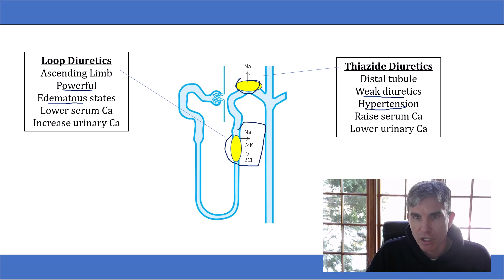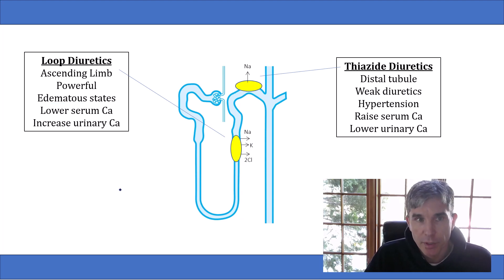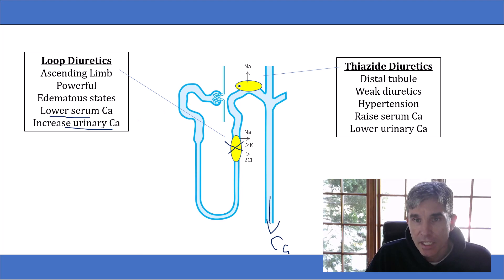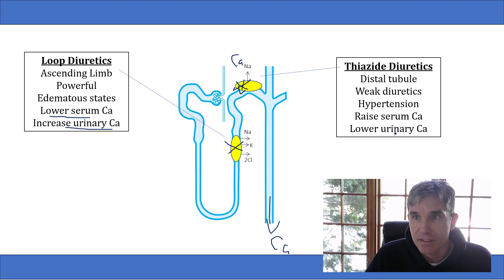The reason they differ in urine output has to do with where they work in the nephron — this portion is very important for reabsorbing sodium and water, while the distal tubule portion is less important. The second big difference between loop diuretics and thiazides has to do with calcium. When you block the loop diuretic channel, more calcium goes out in the urine — you lose calcium from the body, so loop diuretics lower serum calcium and increase urinary calcium. In contrast, blocking the thiazide channel causes more calcium to stay in the blood and less to go out in the urine — thiazides raise serum calcium and lower urinary calcium.